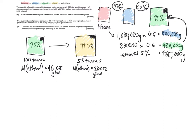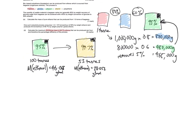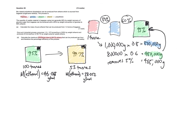Calculate the maximal theoretical mass of 99.7% ethene that can be produced per hour. Now, is it asking for the pure ethene, or is it asking for the total ethene with the impurities? It's asking for the mass of impure ethene with the impurities. So that means it's going to be slightly greater than the mass of pure ethene. So we have to actually apply that 95% to that ethanol.